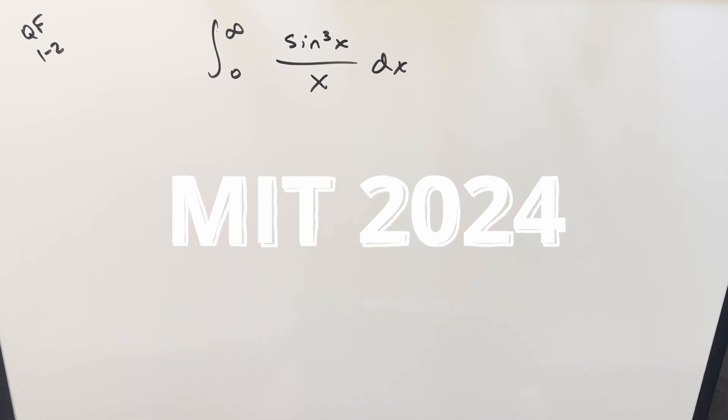We have the integral from zero to infinity, sine cubed x over x dx. Okay, I did this one a month or so back, and what we did on that one was Feynman's trick, and today I want to go for an alternative method on this. This one's going to go a little quicker, I think.